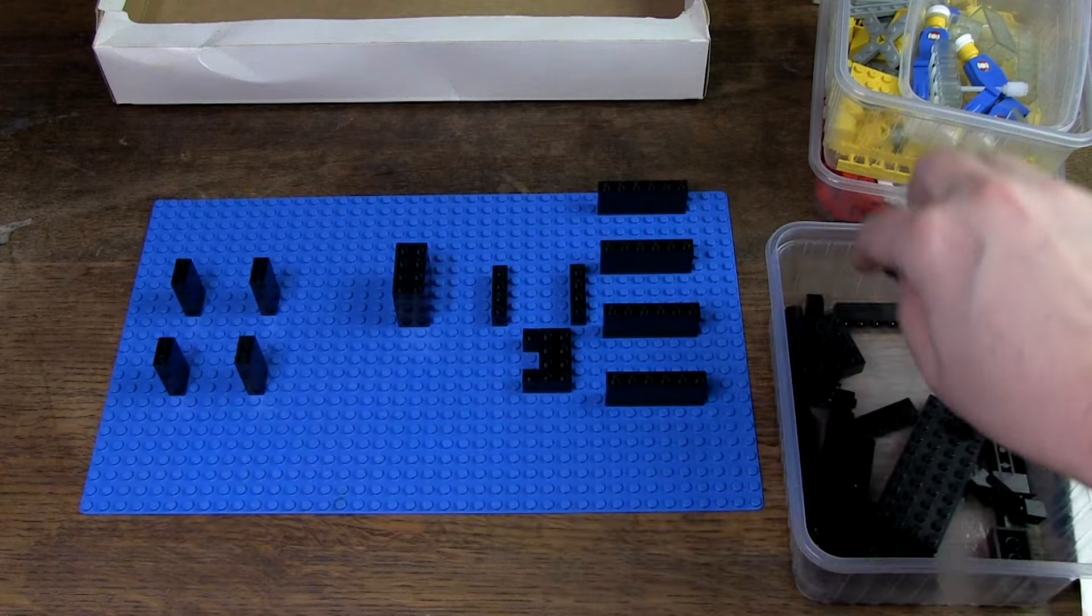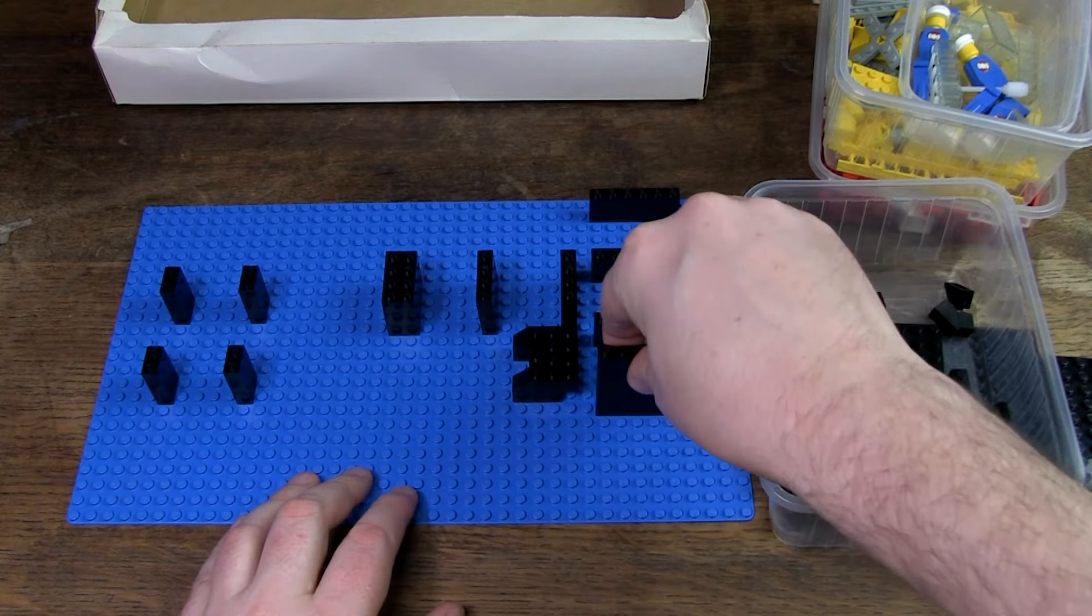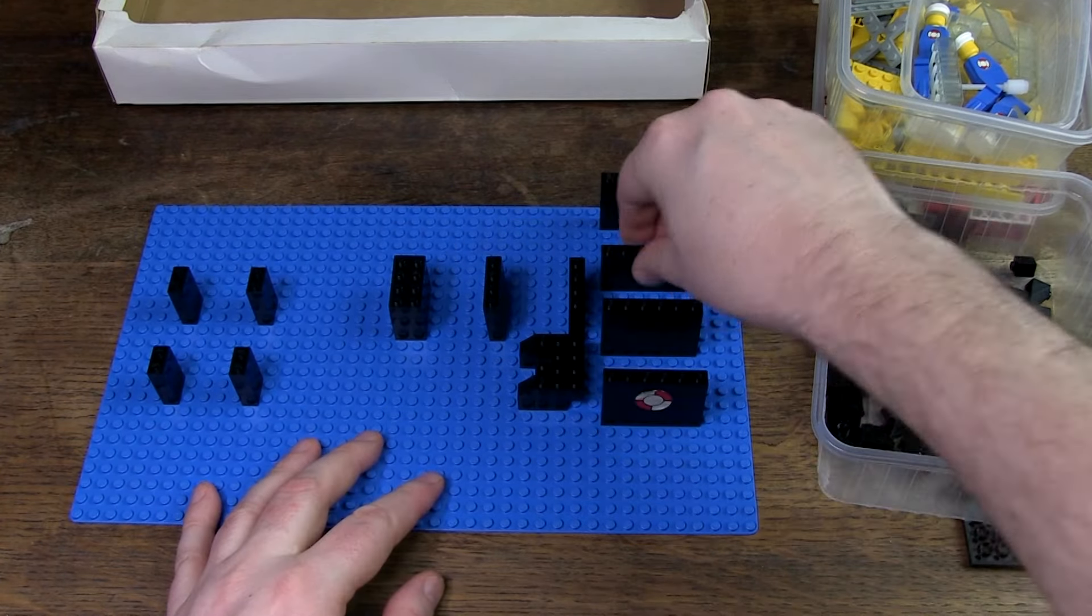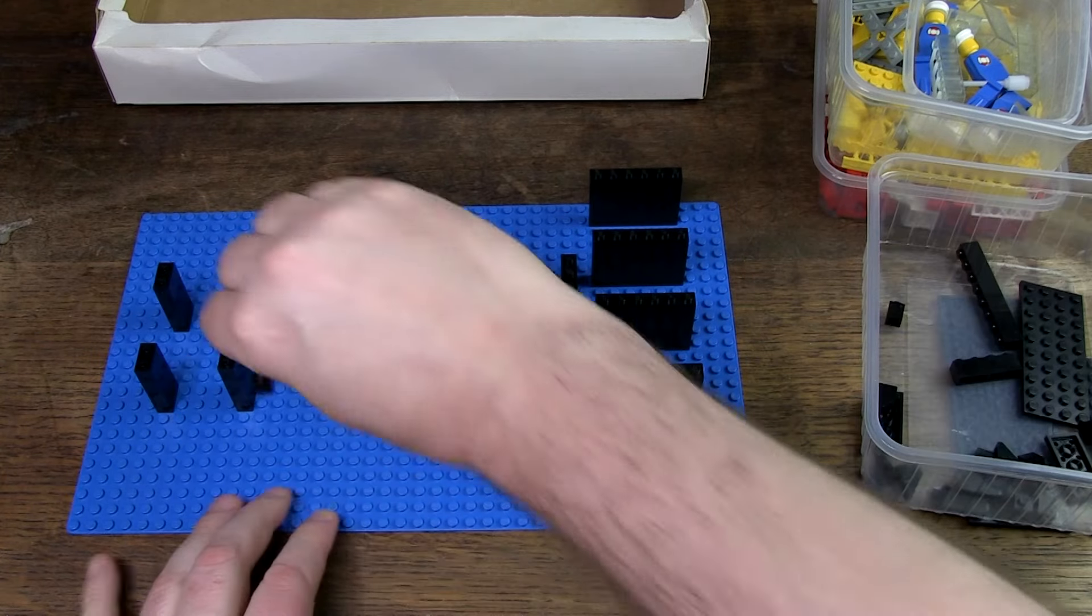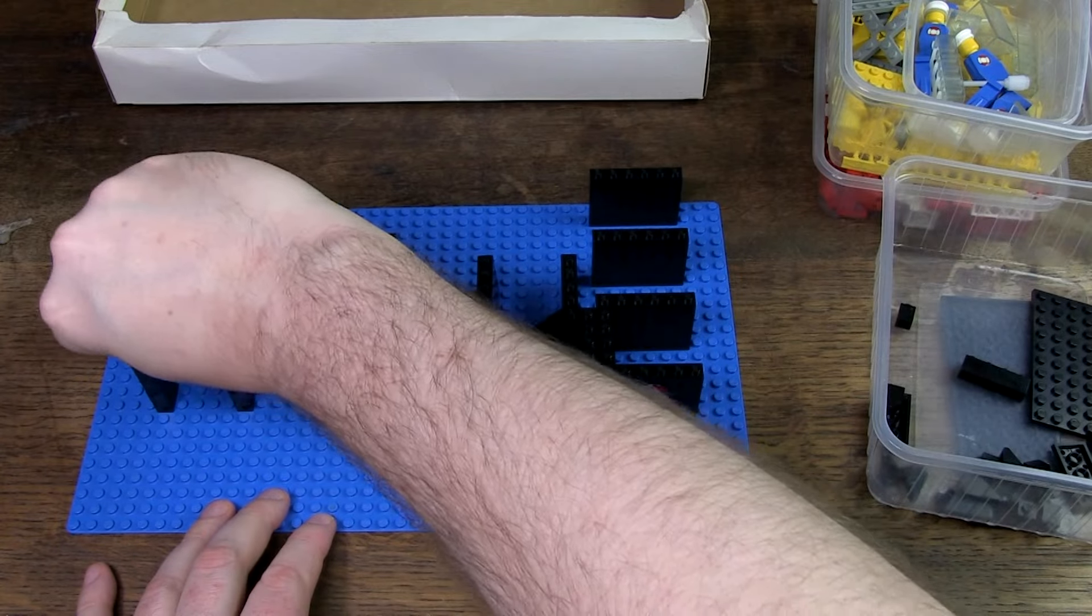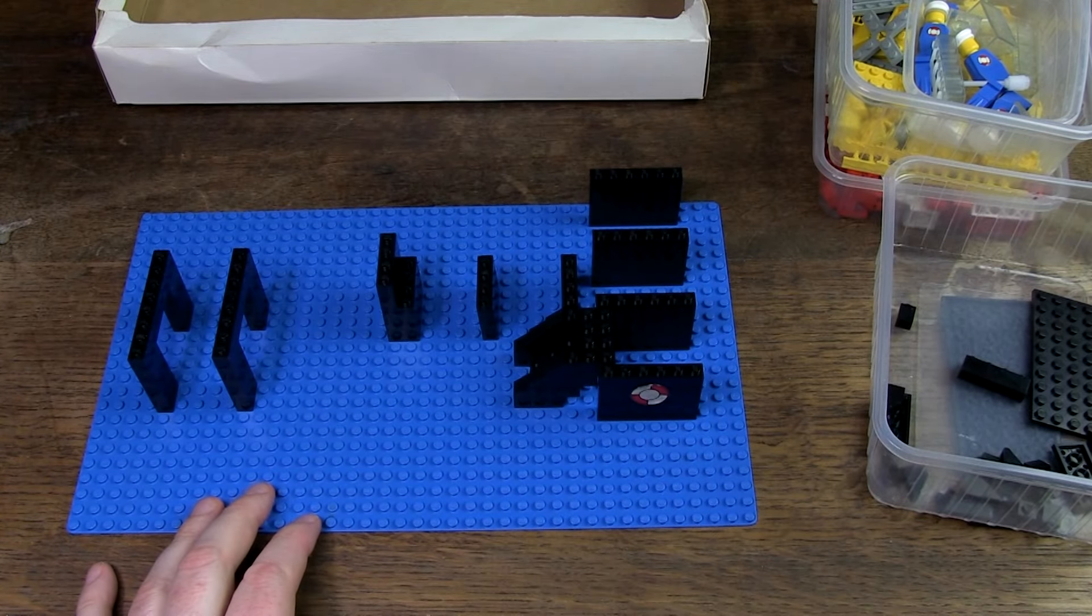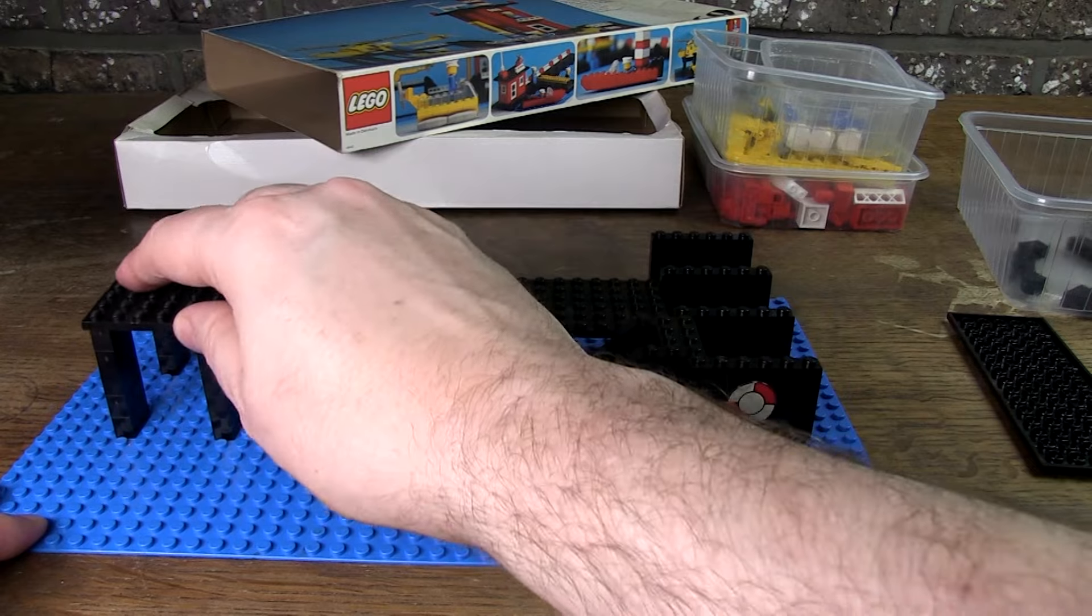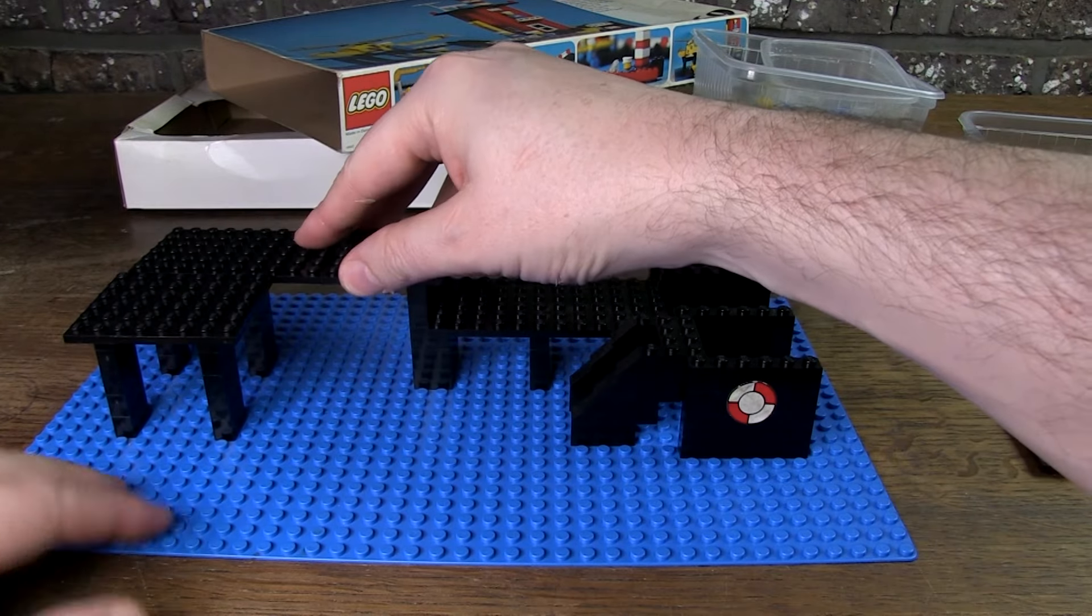I'm building a set from 1976, so the bricks are still very basic. And I don't mind that at all. The pontoon and helipad consist of more than 80 black bricks in different sizes and shapes. If these were all ready-made pieces, as you know them from the more recent sets, there would be little fun in building the set.